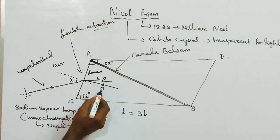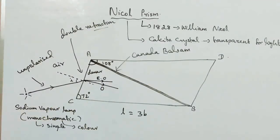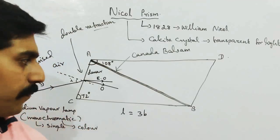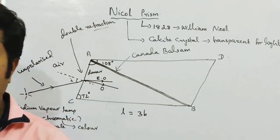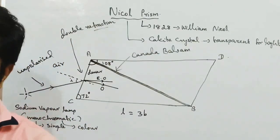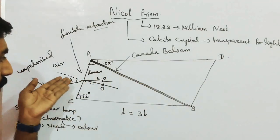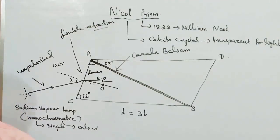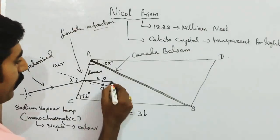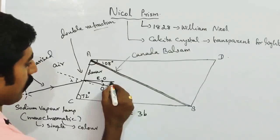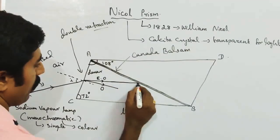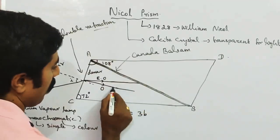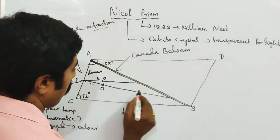When unpolarised light enters, double refraction splits it into two rays: the ordinary ray and the extraordinary ray. These two rays travel at different velocities — velocity means speed with direction. The ordinary ray and extraordinary ray travel in different directions with different speeds.